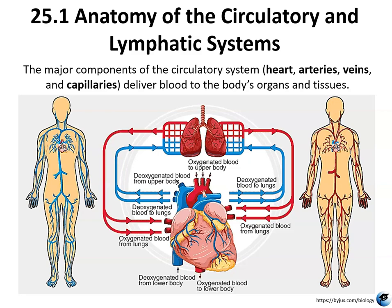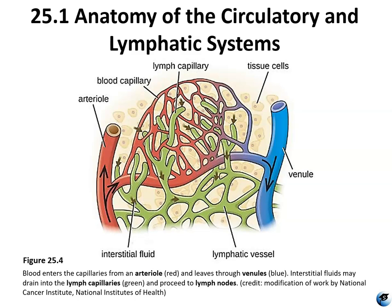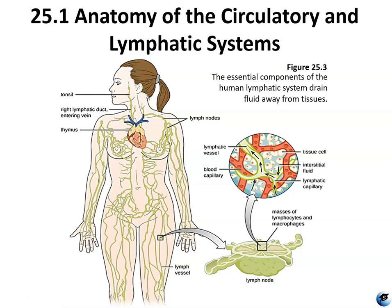The major components of the circulatory system deliver blood to the body's organs and tissues, showing the heart, arteries, veins, and capillaries, including how oxygenated blood leaves the lungs and enters the heart, and how deoxygenated blood is moved to the lungs. Figure 25.4 shows how blood enters the capillaries from the arteriole, leaves through the venules, and interstitial fluids drain into the lymph capillaries, proceeding to the lymph nodes. Figure 25.3 shows the essential components of the human lymphatic system and how it drains fluid away from tissues and returns it to the cardiovascular system.